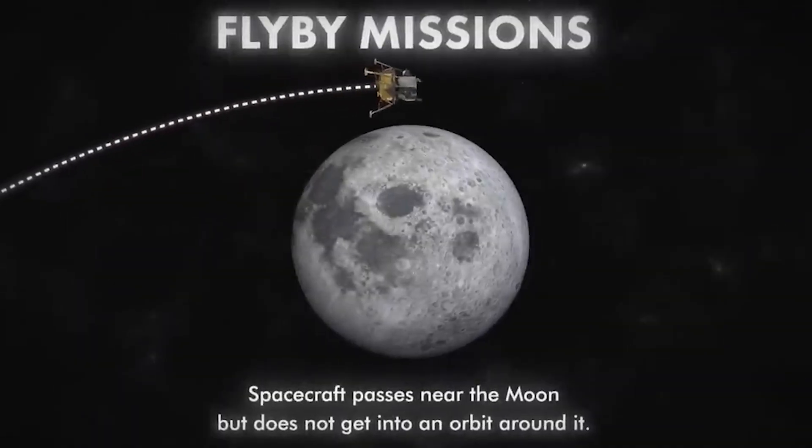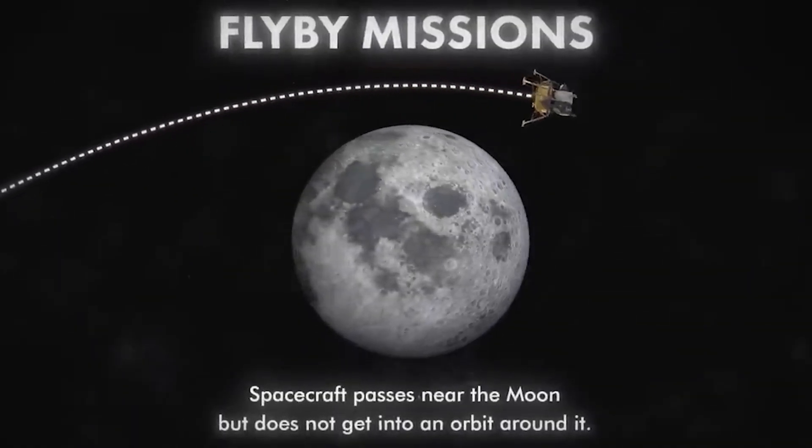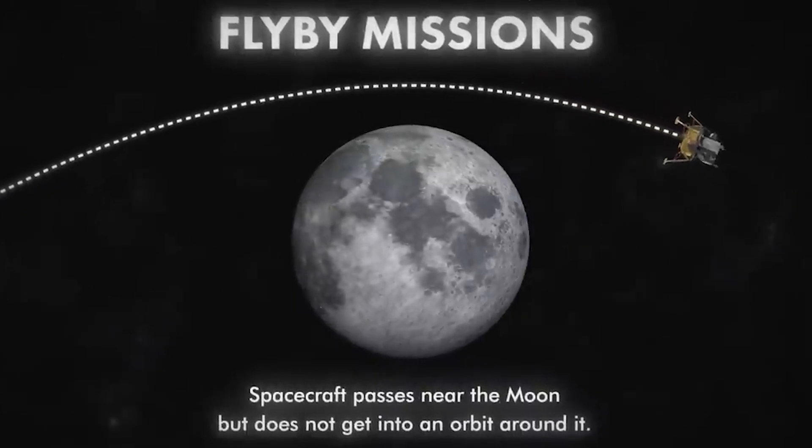In the 1950s, humans began attempting to reach the moon. There are many types of missions. The first type is the fly-by mission — the spacecraft just flies past the moon orbit and that's all. It's just a flyby.